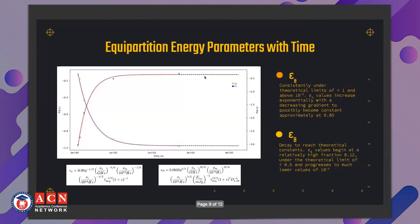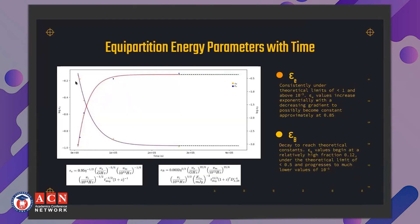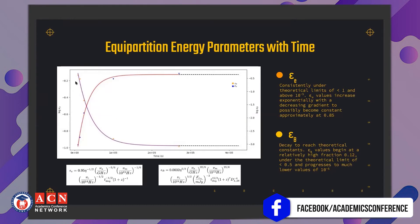After finding the break frequencies, we derived epsilon_e and epsilon_B at five different time frames: 0.1 days, 0.16 days, 0.28 days, 1.6 days, and 3.13 days. The graphs show that epsilon_e is consistently under the theoretical limit of 1 and above 10^(−5), with values increasing exponentially with a decreasing gradient to become approximately constant at around 0.85. Meanwhile, epsilon_B decays from a relatively high fraction of 0.12, well under the theoretical limit of 0.5, down to much lower values of 10^(−5).